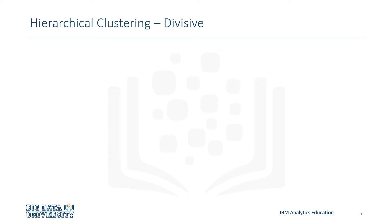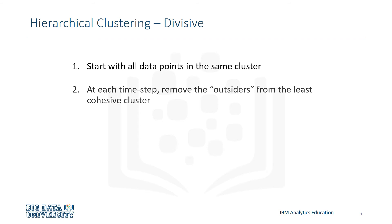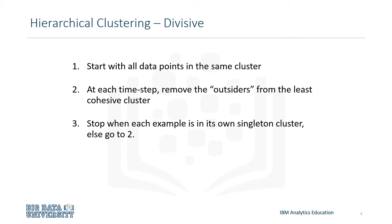We'll be looking at two different kinds of divisive clustering. In the first method, we start off with one cluster which contains all of the data points in it. Next, we remove the outsider from the least cohesive cluster. Finally, we stop when each data point is in its own cluster. If this doesn't happen by this point, then repeat the previous step.